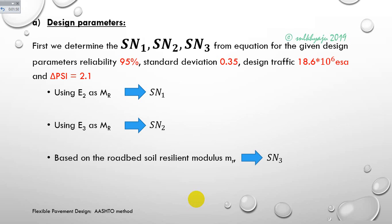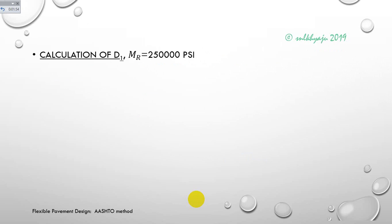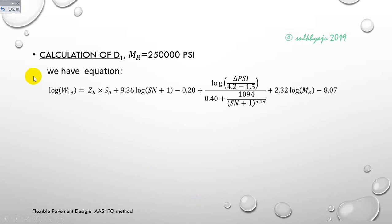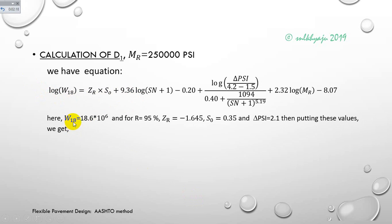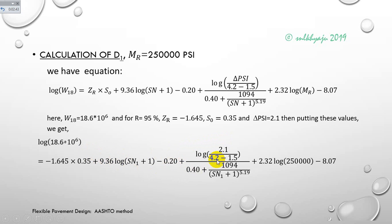For the calculation of d1 — the depth of wearing course — we use the resilient modulus E2 of the base course, which is 250,000 psi. Using the AASHTO equation for structural number SN1, with design traffic W18 = 18.6 × 10^6, reliability 95%, ZR = -1.645 (from table), standard deviation 0.35, and delta PSI = 2.1, we solve the equation to get structural number SN1 = 1.420.